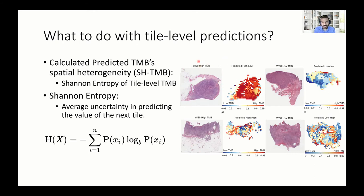When we look at low heterogeneity with predicted TMB-high, we see that most tiles have TMB-high values. However, with high heterogeneity and high TMB prediction, we see a wide variety of tile TMB values. We see the same on the low end of ground truth TMB values: low heterogeneity is mostly low, and with high heterogeneity, we see a wide range of tile values.